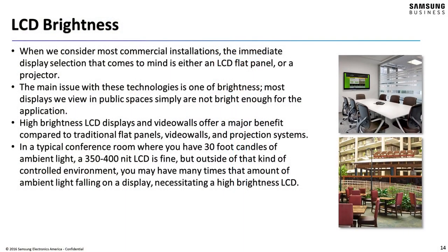LCD brightness is the other obvious specification we have to consider for outdoor panels. Indoor grade panels range from 350 to 400 nits for a standard panel, up to about 700 nits for higher-bright panels — those work really well depending on how much ambient light you have in the space. But when we start talking about higher brightness environments like an atrium, a storefront window, or outdoors, the sun is the brightest source of light any of us are ever going to encounter. Now we're starting to deal with much higher brightness requirements.